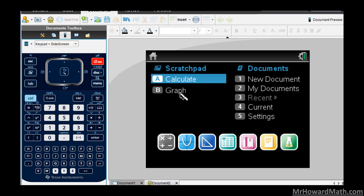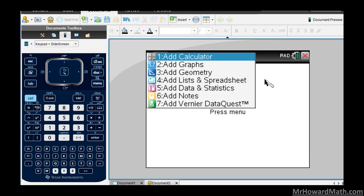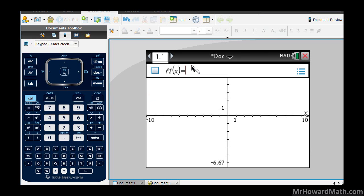We could enter it into the graph scratch pad here, but the best thing to do is make a new document. Usually that's better because we can add pages to the document and do more with it. So I'm going to choose a new document and start with a graph.